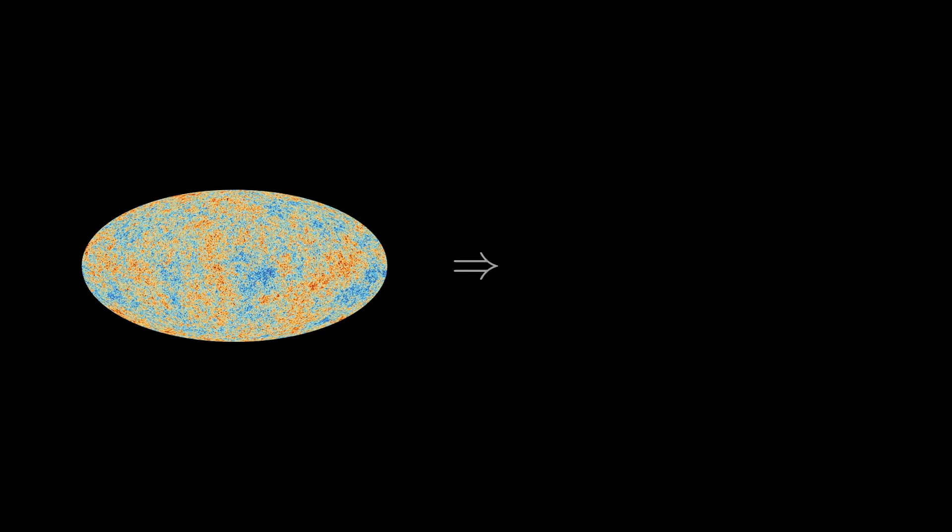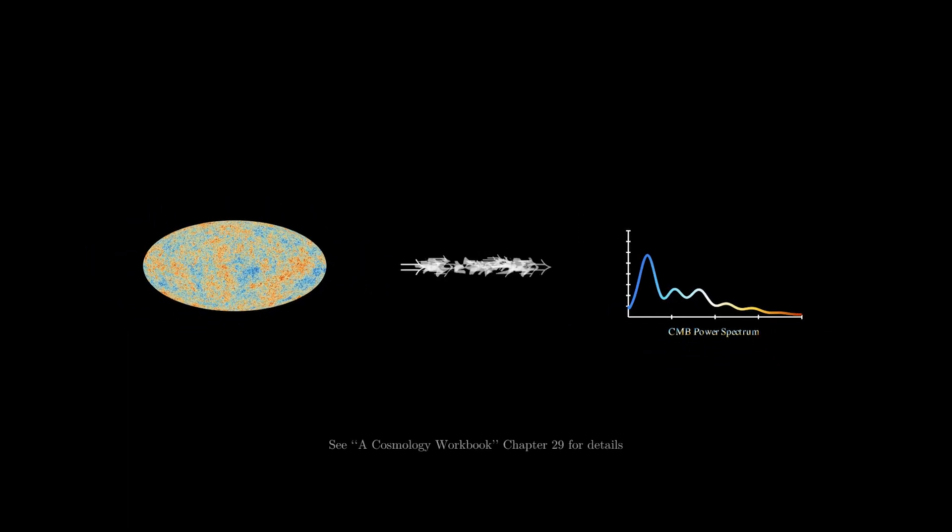The single most informative statistic for characterizing the variations in CMB brightness is its power spectrum. The mathematical procedure used to yield this statistic is called a Fourier transform, but for now we're going to skip the hard math and explore what this transformation represents visually.